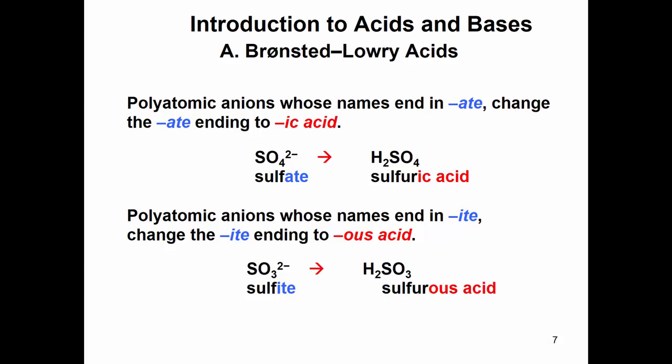Polyatomic anions are also involved in names of acids. And they typically end in A-T-E or I-T-E. And so the same idea, the A-T-E is dropped. And when it's an acid, it becomes, instead of sulfate, it becomes sulfuric acid. This polyatomic ion here is sulfite. And so the ending is dropped, and it becomes sulfurous acid.